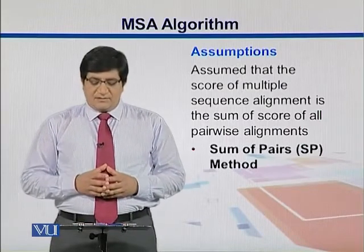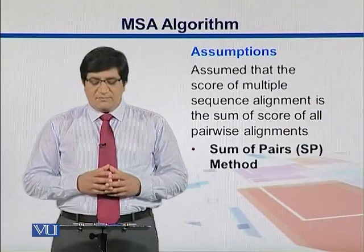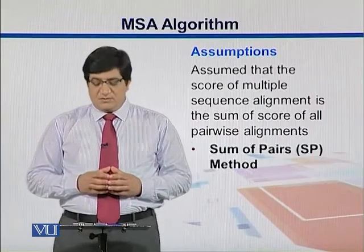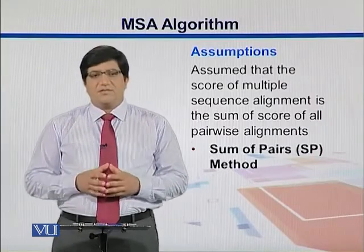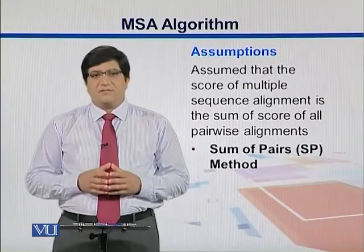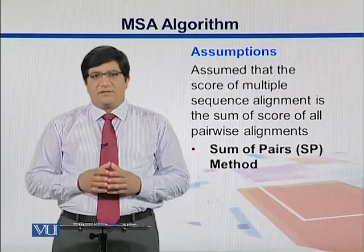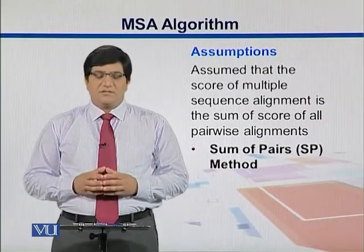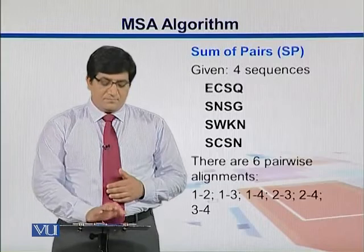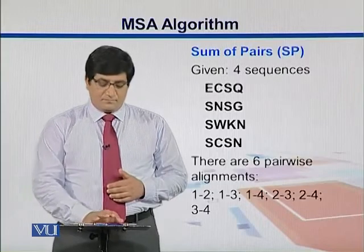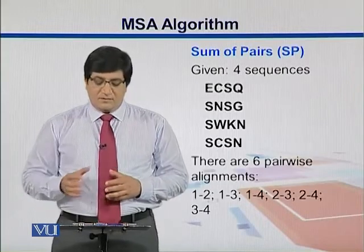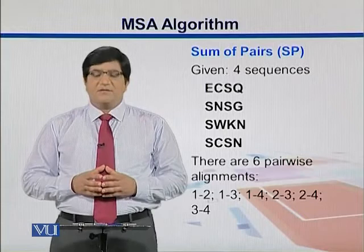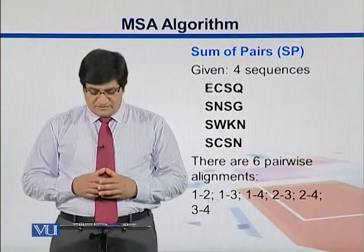It assumes that the score of multiple sequence alignment is the sum of the scores of all pairwise alignments. There is a sum of pairs, or SP method, that has been implemented in this algorithm. Let's try to understand the sum of pairs method with an example.